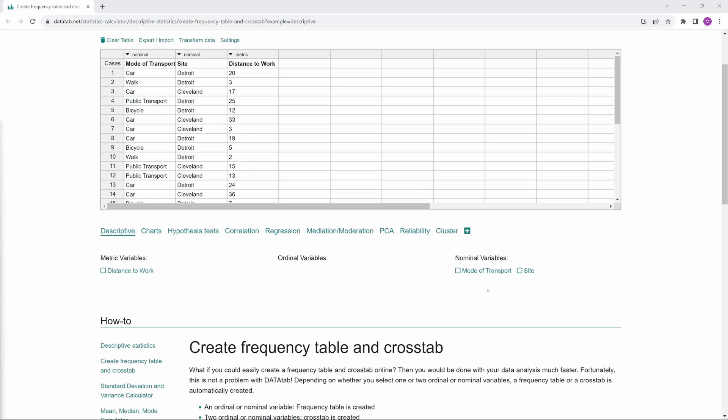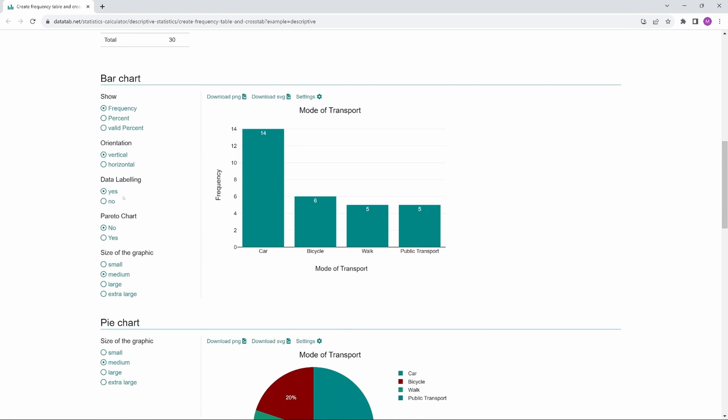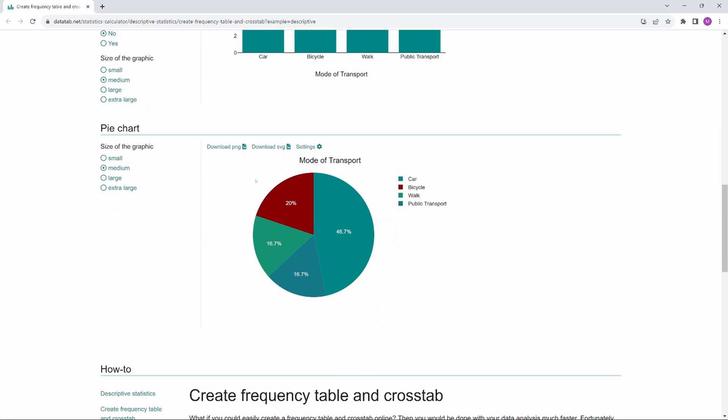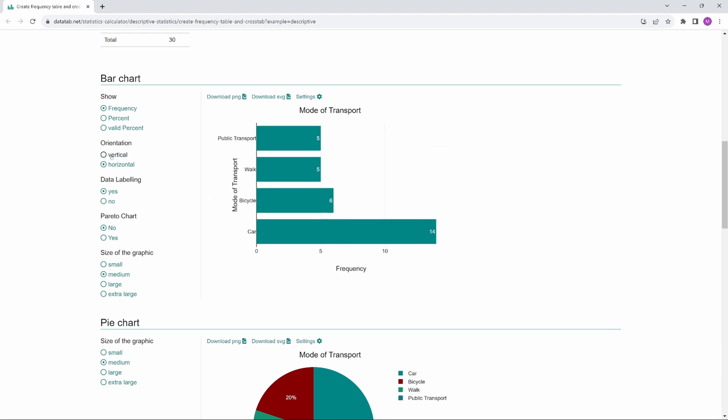Now, if we only click on mode of transport, we get a frequency table and we can also display the percentage values. If we scroll down, we get a bar chart and a pie chart. Here on the left we can adjust further settings. For example, we can specify whether we want to display the frequencies or the percentage values, or whether the bars should be vertical or horizontal.